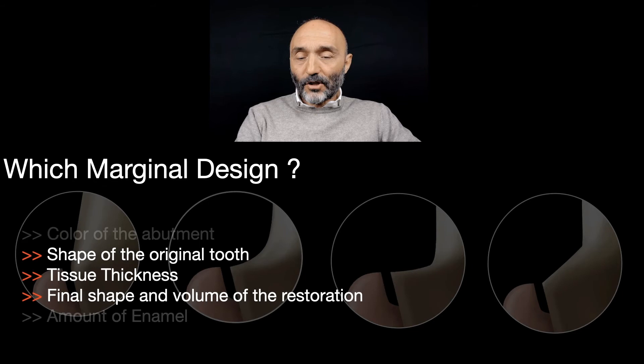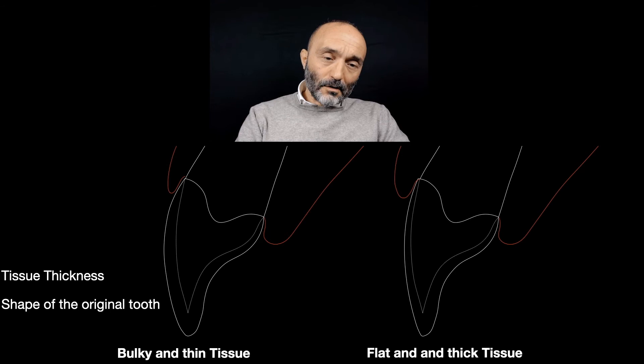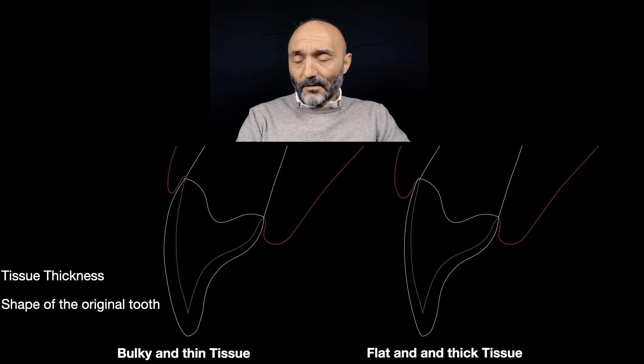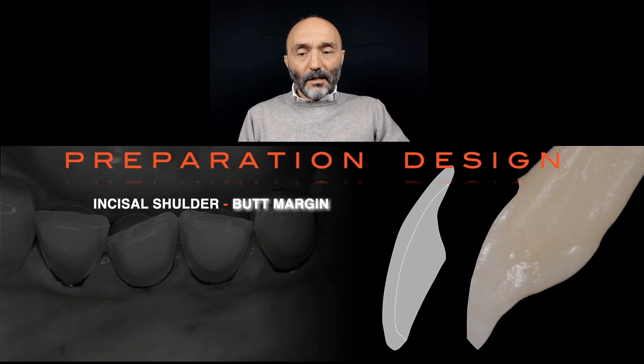The marginal design depends on the shape of the original tooth, the tissue thickness, and the final shape we have to obtain with the final restoration. There are two different scenarios in clinical practice. In the first case — when we have bulky teeth and thin tissue — a different type of design is the incisal shoulder or butt margin. With this design we can save tooth structure.